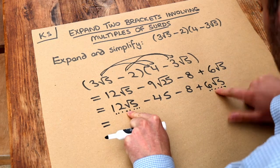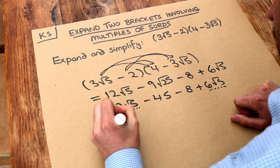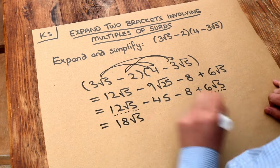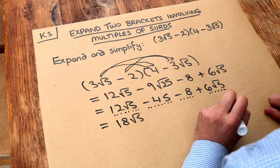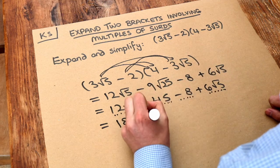Twelve lots of root five plus six lots of root five is eighteen lots of root five. And then let's collect the non-surds together, the things without the square roots.